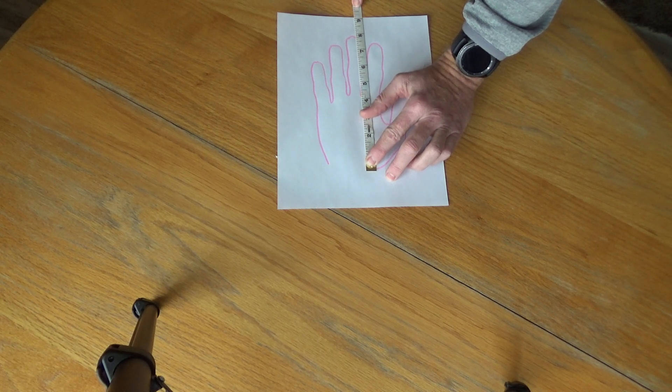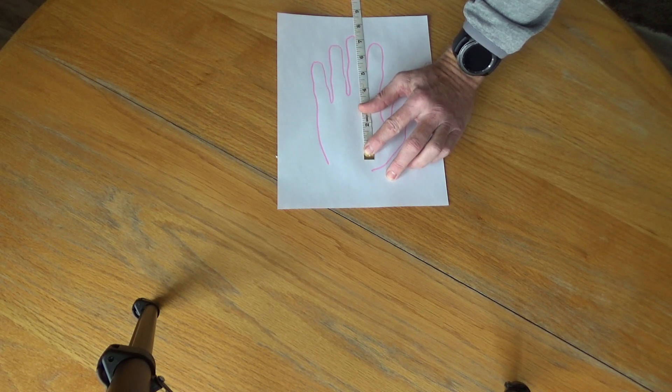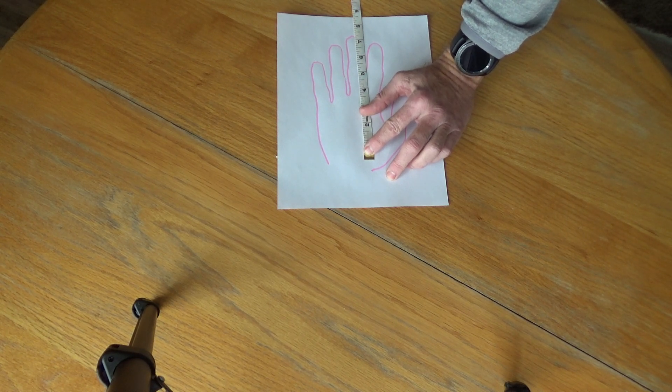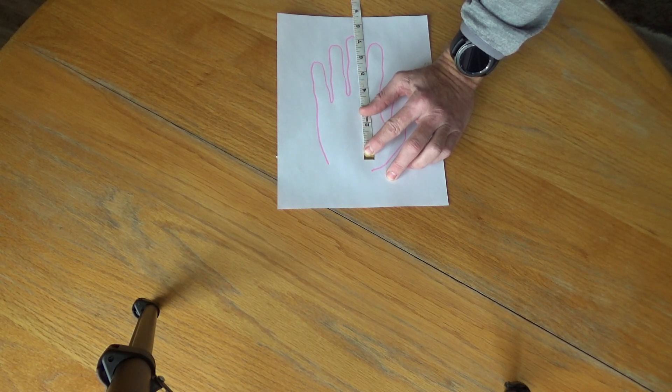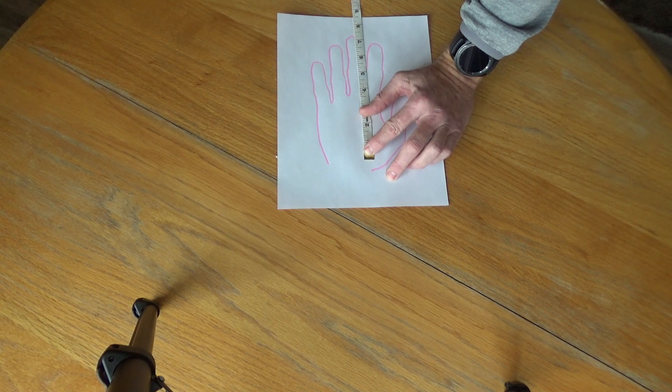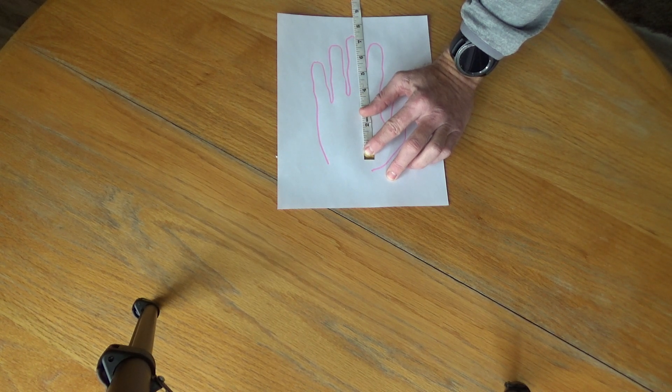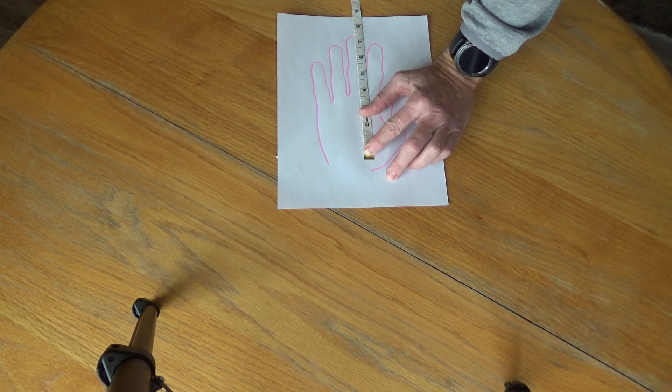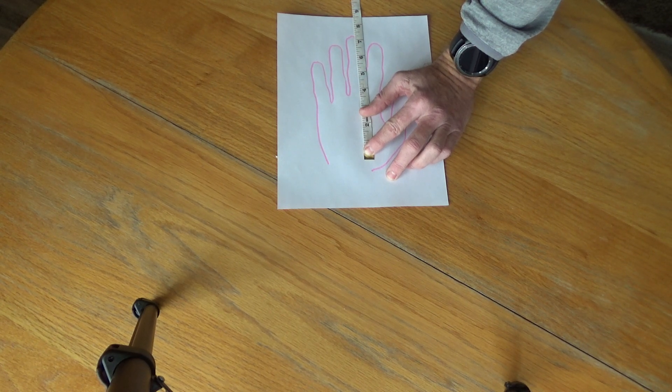Now if, for instance, the size of your finger was seven and a quarter, you would round that up. So you would round that up to the nearest inch. That would mean you would go to eight inches and add one and you would be a size nine.